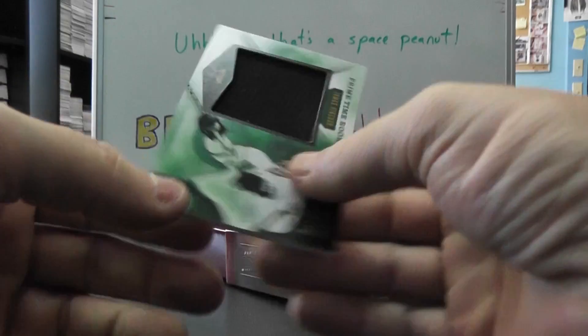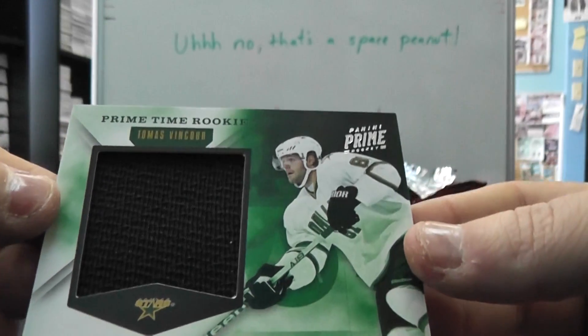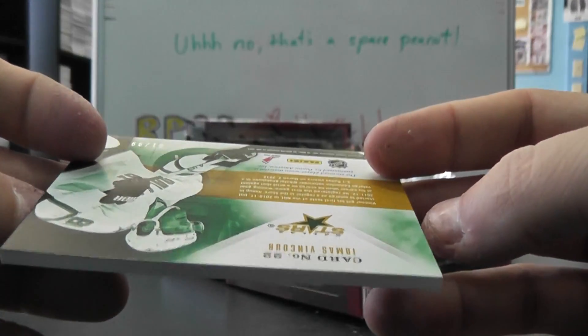And we'll end on, dang, this box had a bunch of jerseys. Another jumbo jersey Thomas Vincour numbered in $99, oh yeah.